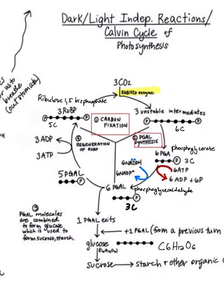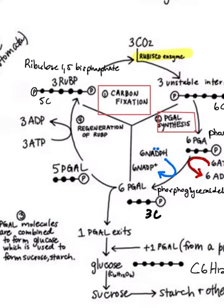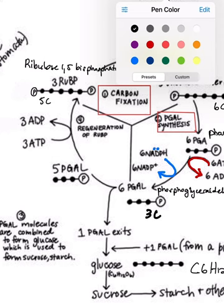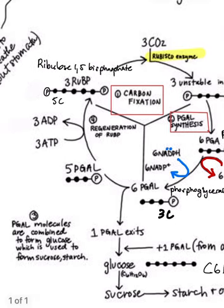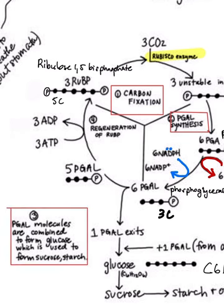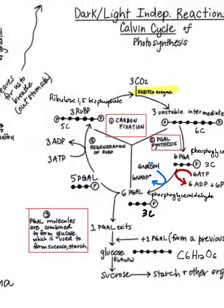So this step three that we had here, our PGAL synthesis is followed by a step here where the PGAL molecules are combined to form glucose, which is then used to form sucrose and eventually starch.